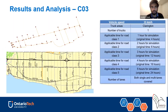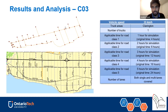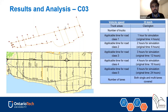Before presenting results, here are the assumptions. The vehicle speed assumed was 35 kilometers per hour. The number of trucks presented in the paper is one for explanation purposes, but the actual total number of trucks was 33. The applicable time for class one roads is one hour for simulation versus four hours as the original city standard. The city required class one roads to be plowed within four hours; we used one hour for simulation. We also considered multiple lanes — roads with multiple lanes allow the vehicle to go and come back.